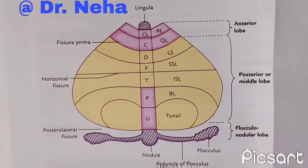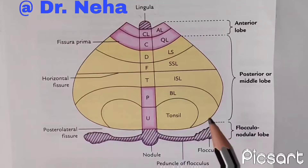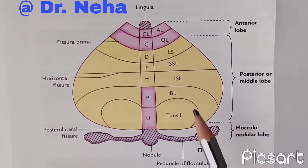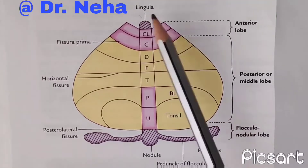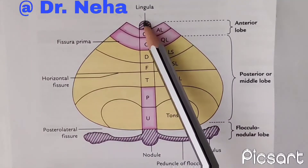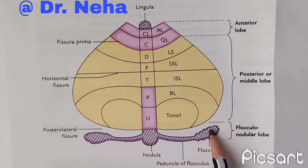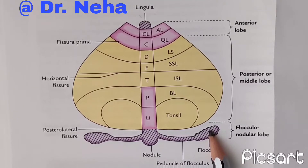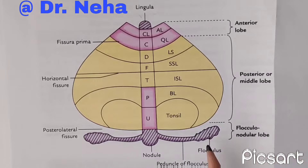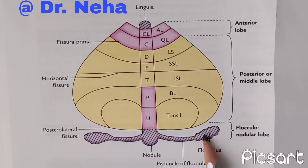Here we can see the morphological subdivisions of the cerebellum. First is the archicerebellum, which is the oldest part. It contains the lingula, nodule, and the flocculus. It has afferent connections with the vestibulocerebellar part, and the function of this part is maintenance of equilibrium of the body, mainly the trunk.